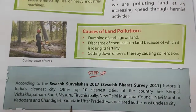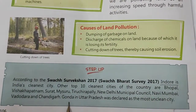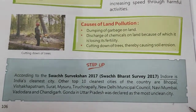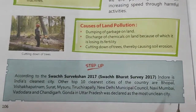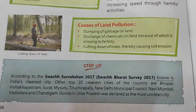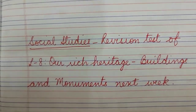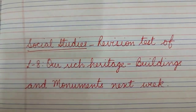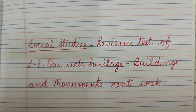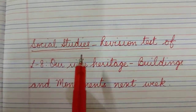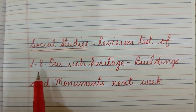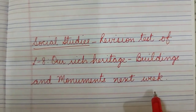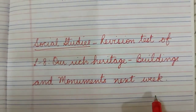Children, we have completed our lesson till here. The explanation of the lesson is complete. We will do the book exercises and question answers next week. Along with that, there will be a revision test of social studies — revision test of lesson number 8, Our Rich Heritage: Buildings and Monuments. Be prepared for the test properly. Till then, goodbye.